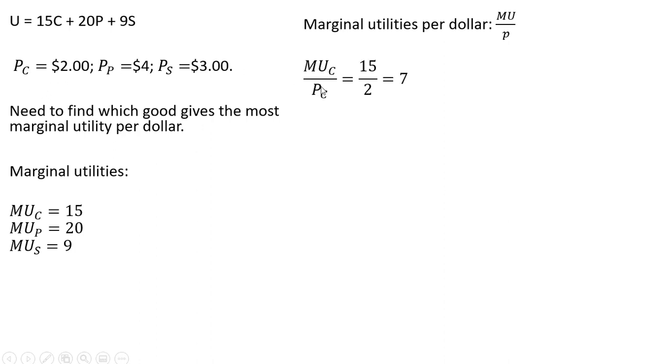The marginal utility per dollar for a cup of coffee is 15 divided by the price, which equals 7. The marginal utility per dollar for protein drinks is 20 divided by 4, which equals 5.